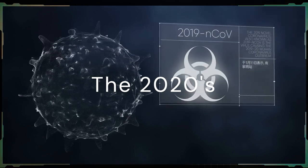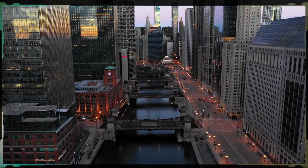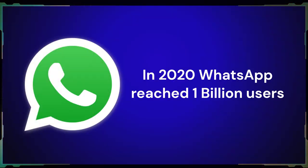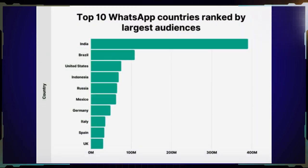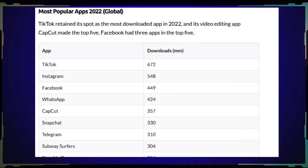The 2020s. With the start of 2020, the world was hit with a pandemic and everyone was quarantined for a year. Television shows normally filmed in front of a studio audience were now being filmed from the comfort of the host's home. During this period, social media usage increased significantly. In 2020, WhatsApp reached 1 billion users, with the top 3 countries using the app being India, Brazil, and the United States. As of 2022, it is one of the top 5 most popular apps globally.